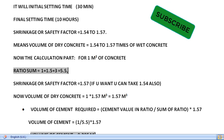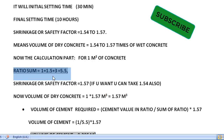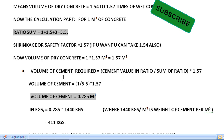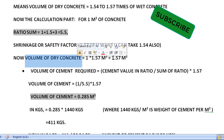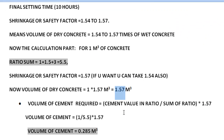The sum of the mix ratio is calculated as: 1 plus 1.5 plus 3 is equal to 5.5. So the ratio sum is 5.5, and the volume of dry concrete is 1.57 cubic meters.